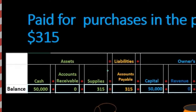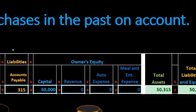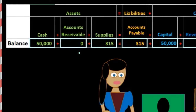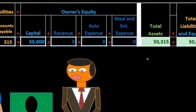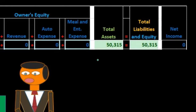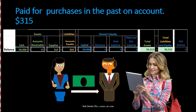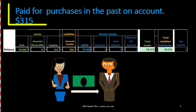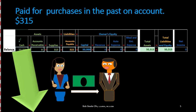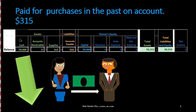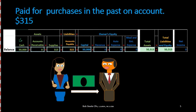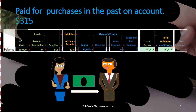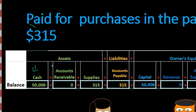Next transaction: paid for purchases made in the past on account, $315. Our beginning balances are the same as in the prior slide. We're paying for something purchased in the past, so first — is cash affected? Yes. The keyword is 'paid.' Any time it says paid, we can assume cash is going down. Then we consider what the other account is. The problem may reference supplies but since it was on account, we should think of accounts payable.